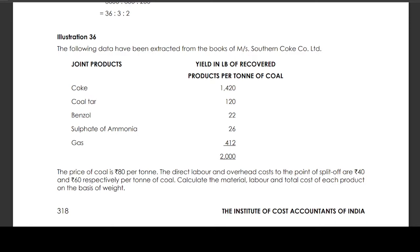Direct labour and overhead cost to the point of split-off are 40 rupees and 60 rupees respectively per ton of coal. Calculate the material, labour and total cost of each product on the basis of weight.